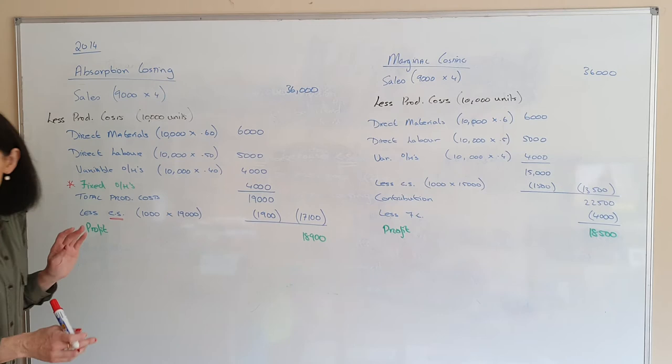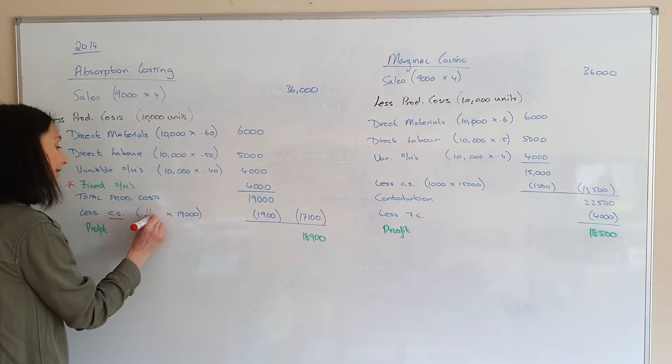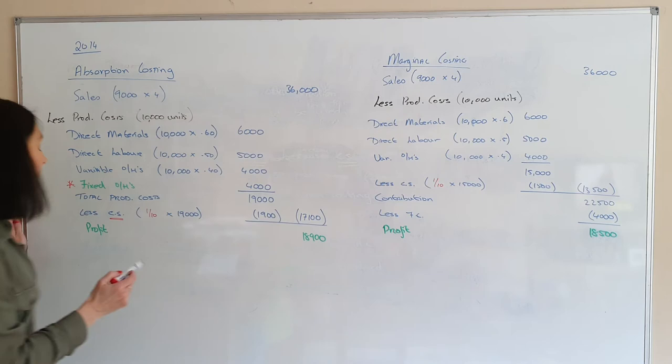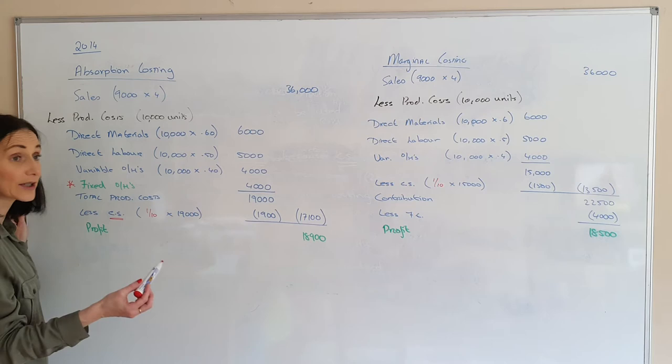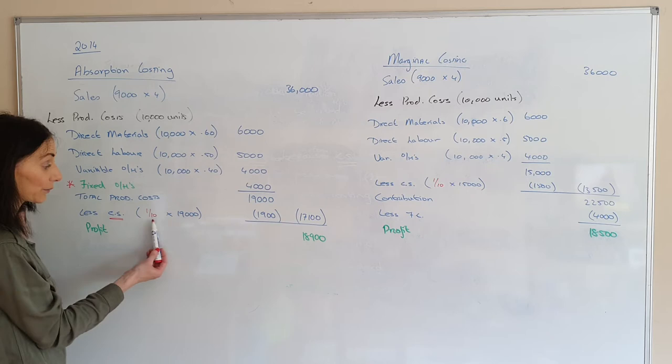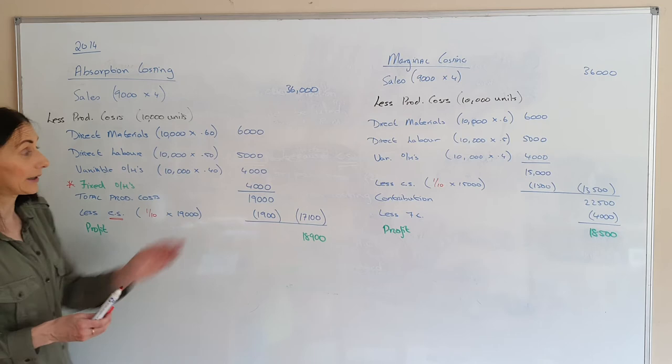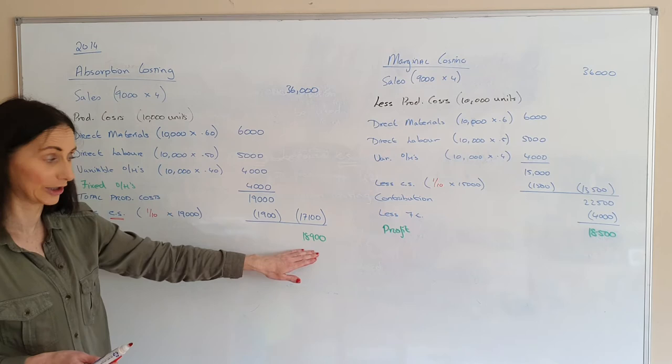So closing stock is one tenth of the total production cost. The total production cost is €19,000, and one tenth of that is left over, so your closing stock should be €1,900. Your closing stock is always valued at cost. So €1,900 is the closing stock, meaning the cost of goods sold gives a profit of €18,900 under absorption costing.